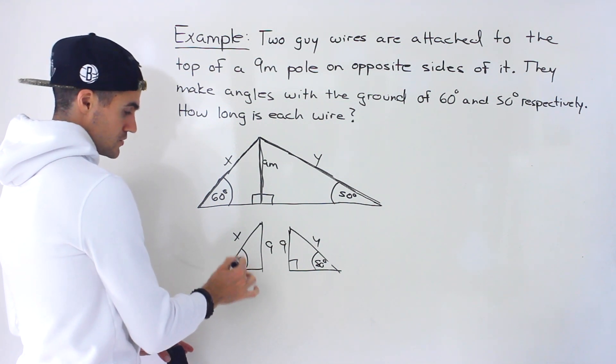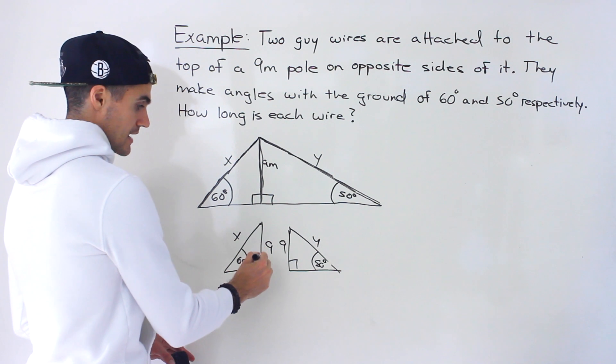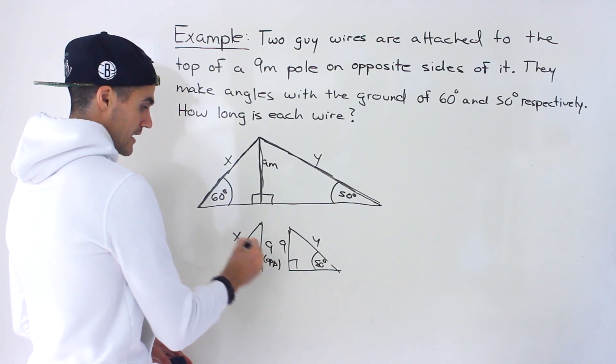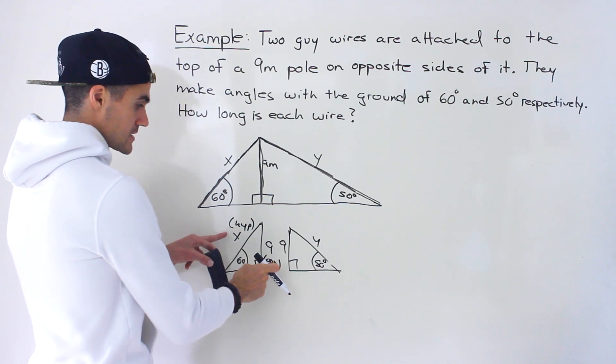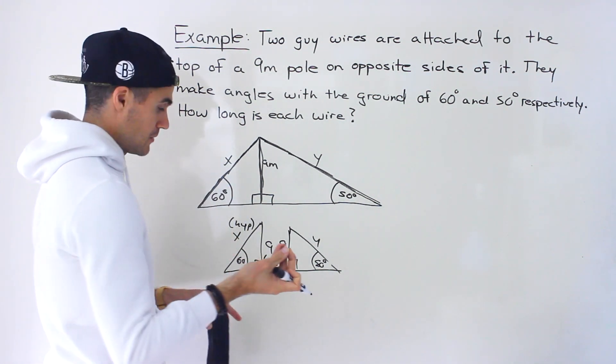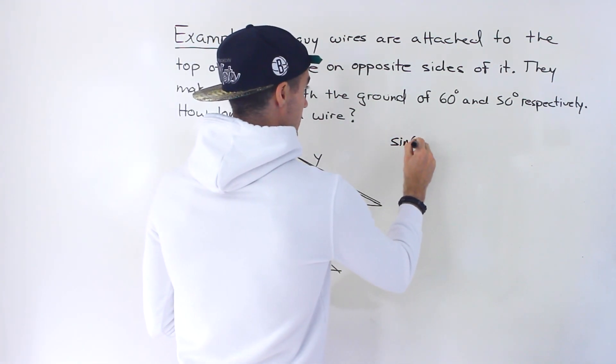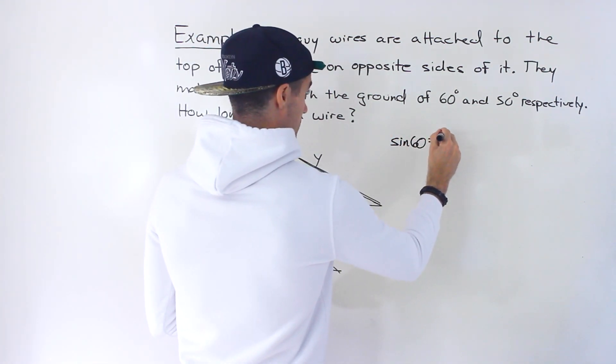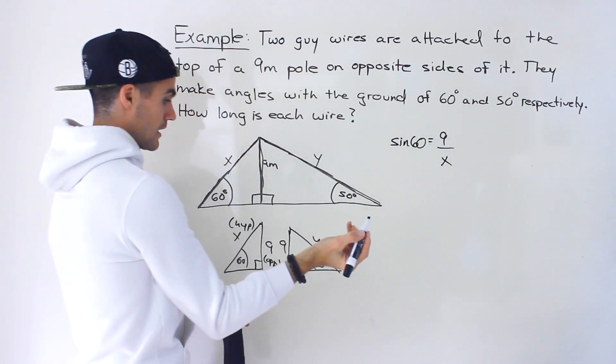Now relative, if we use this angle as the reference, notice that the nine, which side is that? That's the opposite. The X is what? The hypotenuse. And so we're dealing with an opposite and a hypotenuse, which would imply that we're dealing with the sine ratio. So we would have sine of 60 equals the opposite over the hypotenuse. So it would be nine over X.